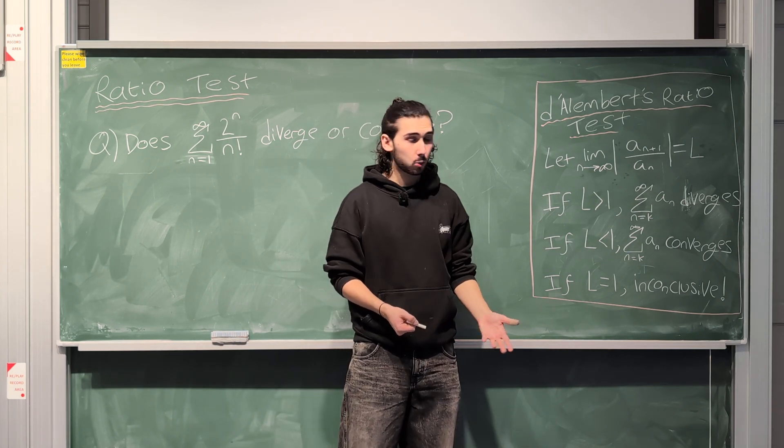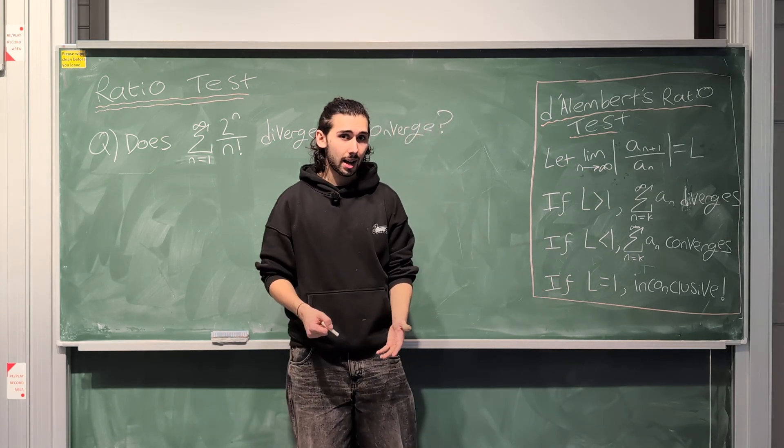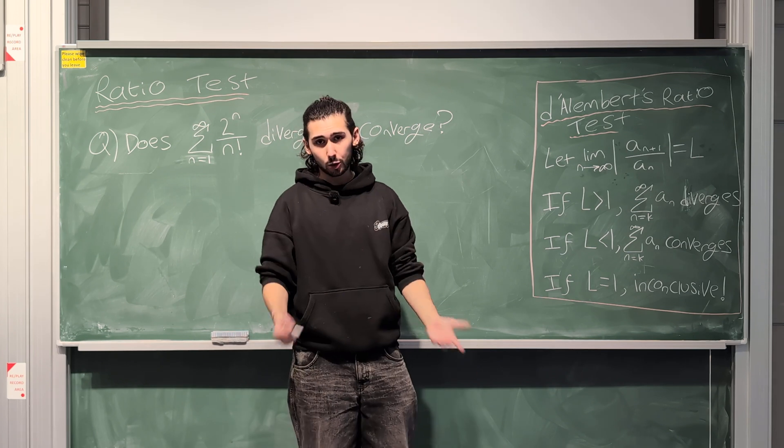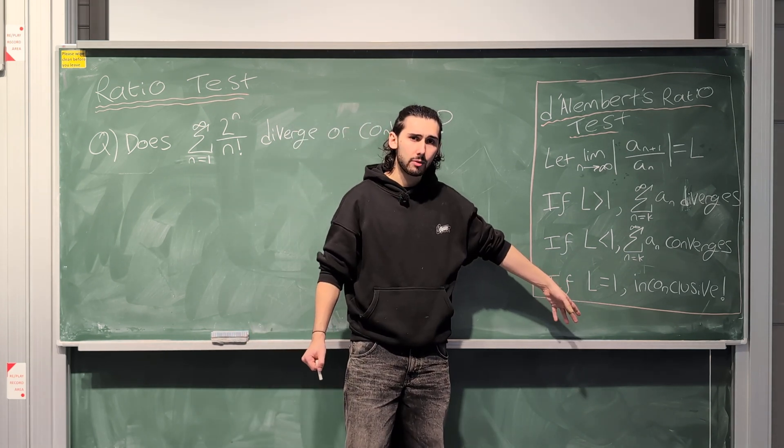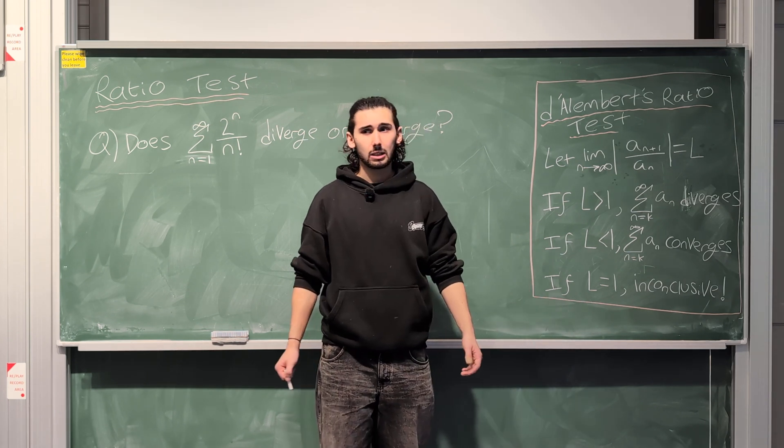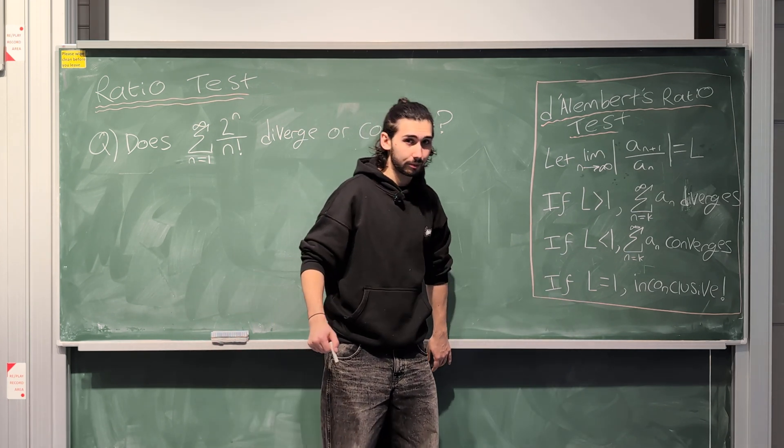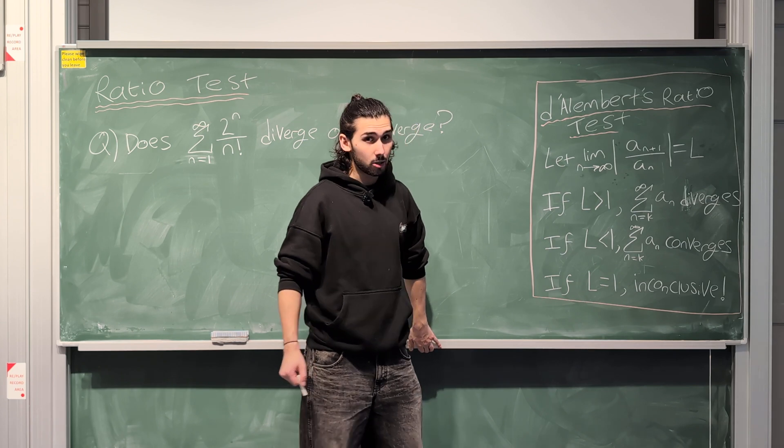There are some series where L is 1 that diverge and there are some series where L is 1 that converge, so it's not enough information. If this happens, you just have to use a different type of test. That's all it means. Or it just means you are in deep water. Maybe you can't do anything.